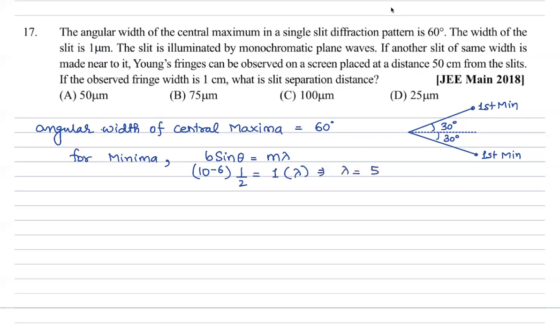Then fringe width for Young's double-slit experiment. In Young's double-slit experiment, fringe width = lambda D by d.